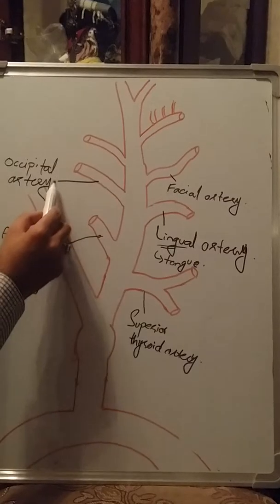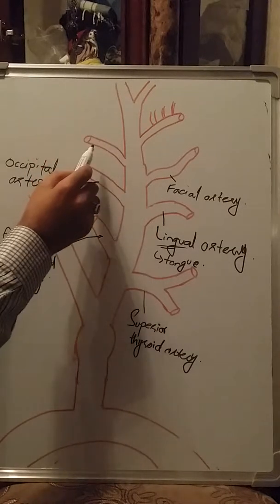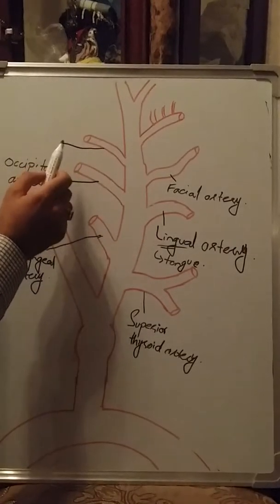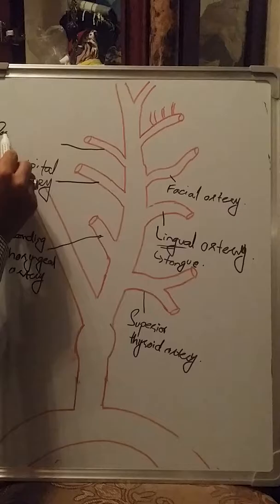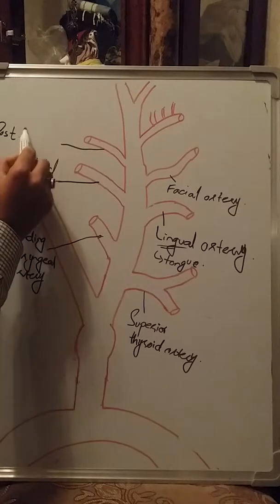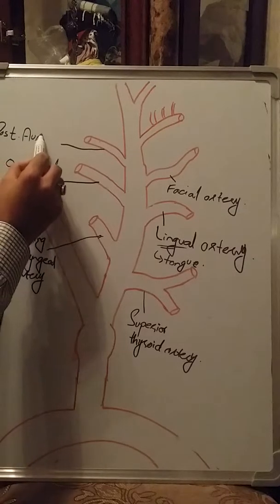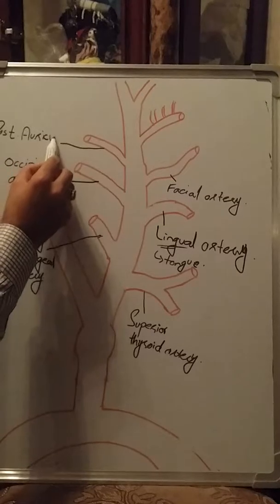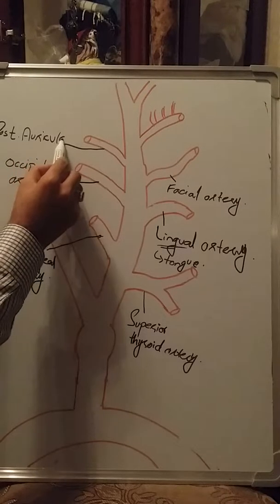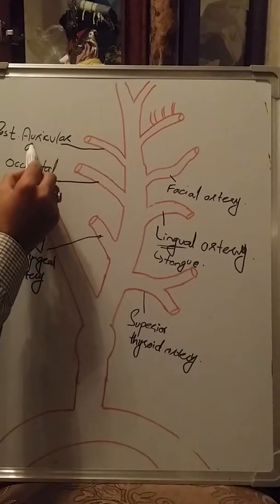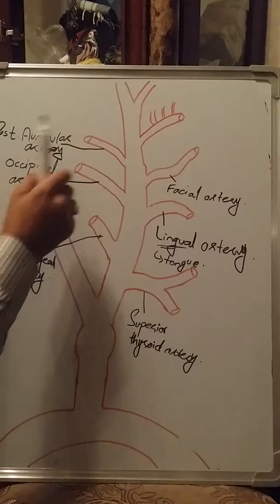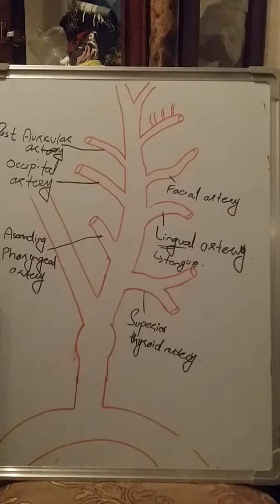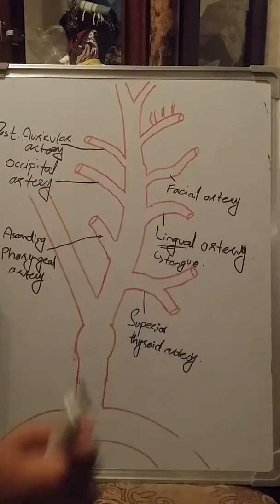Above the occipital artery, another artery is called the posterior auricular artery. This artery supplies the area around the posterior ear region.